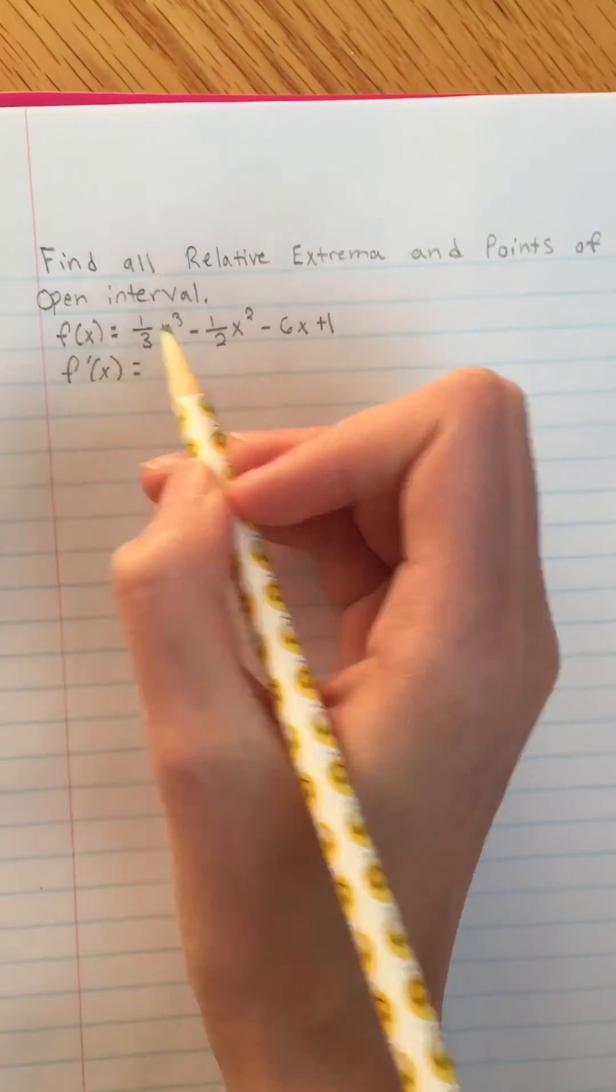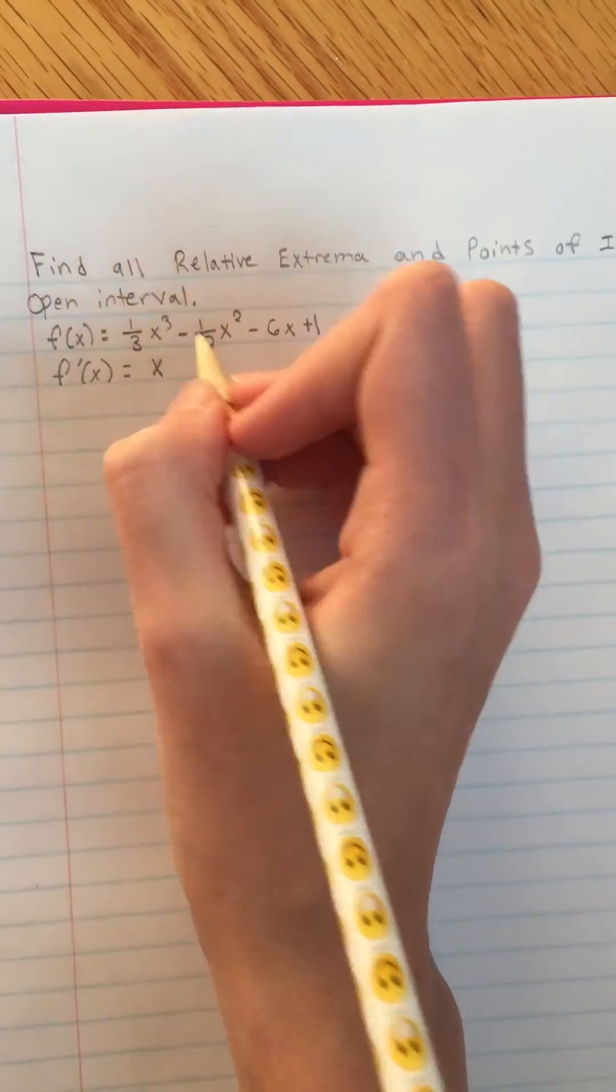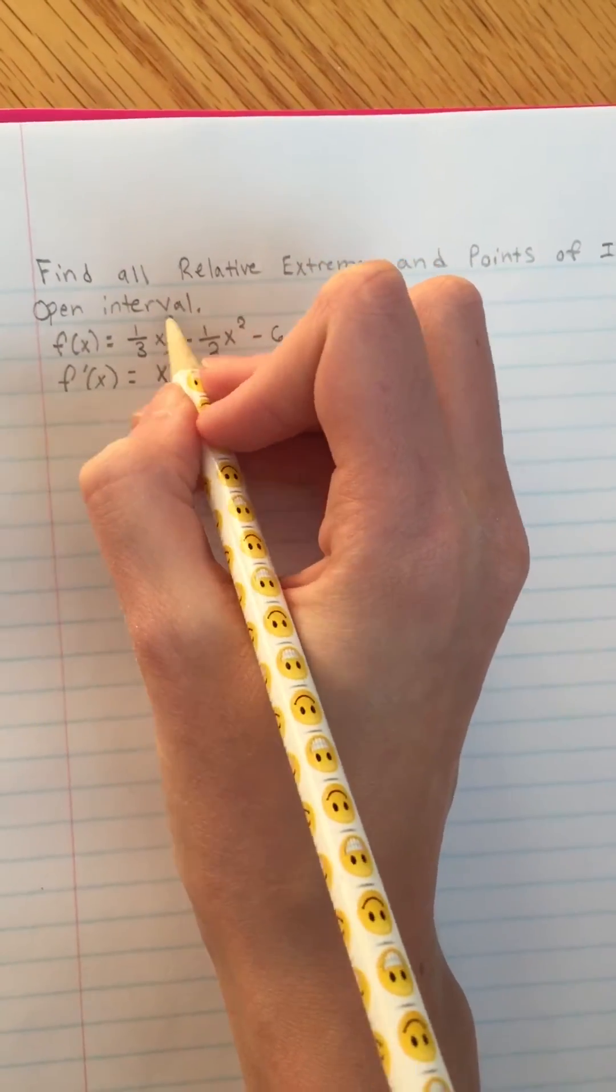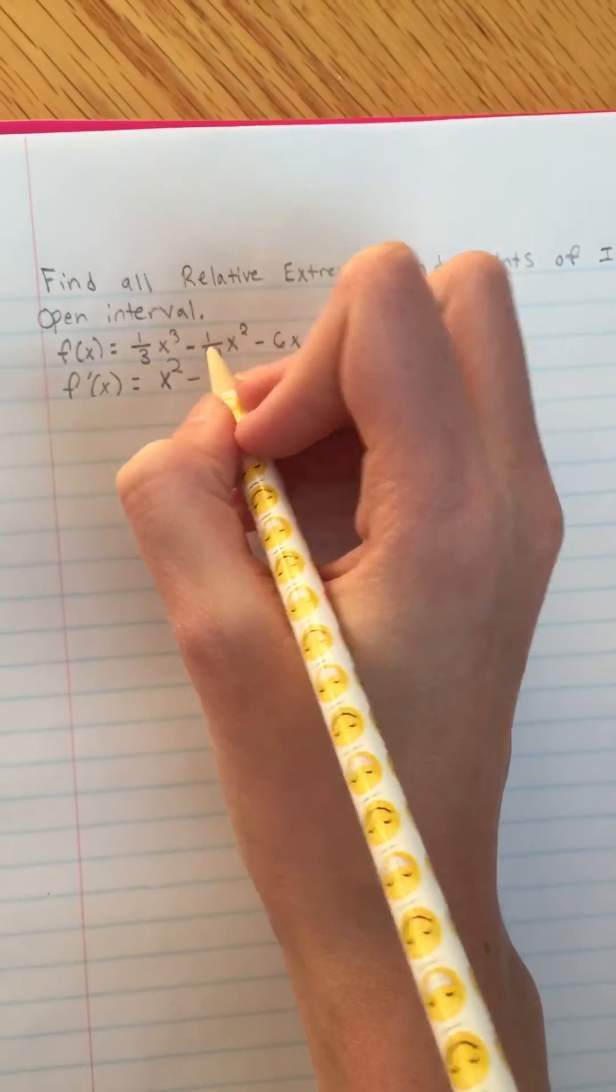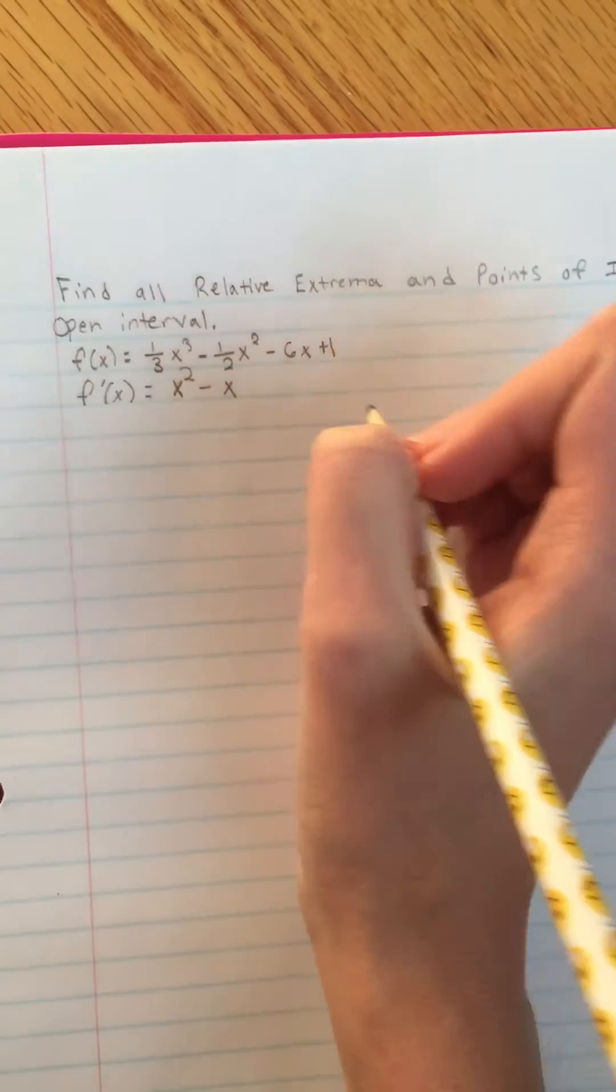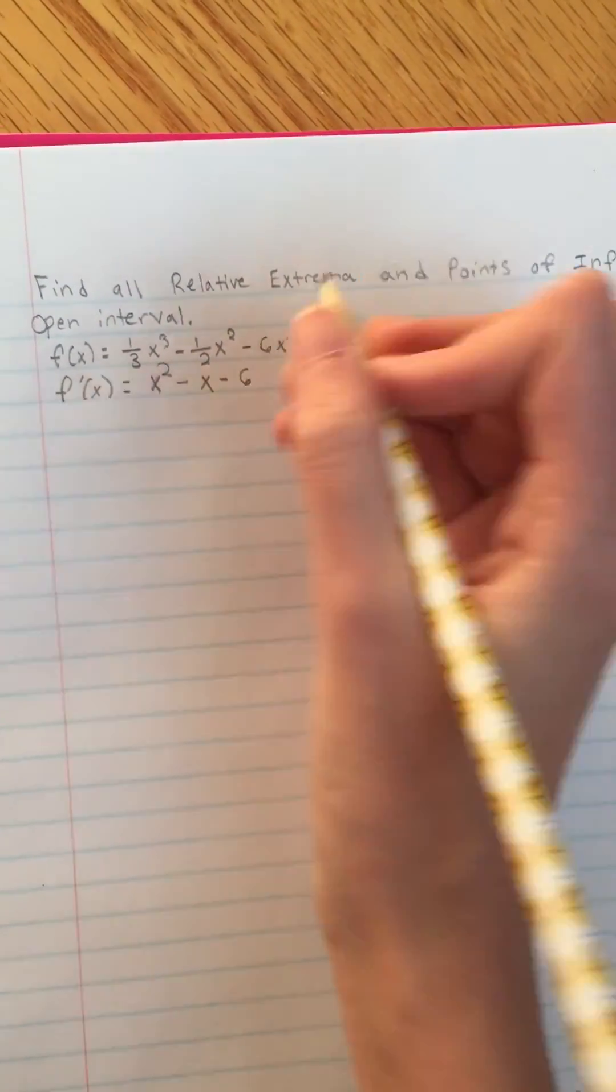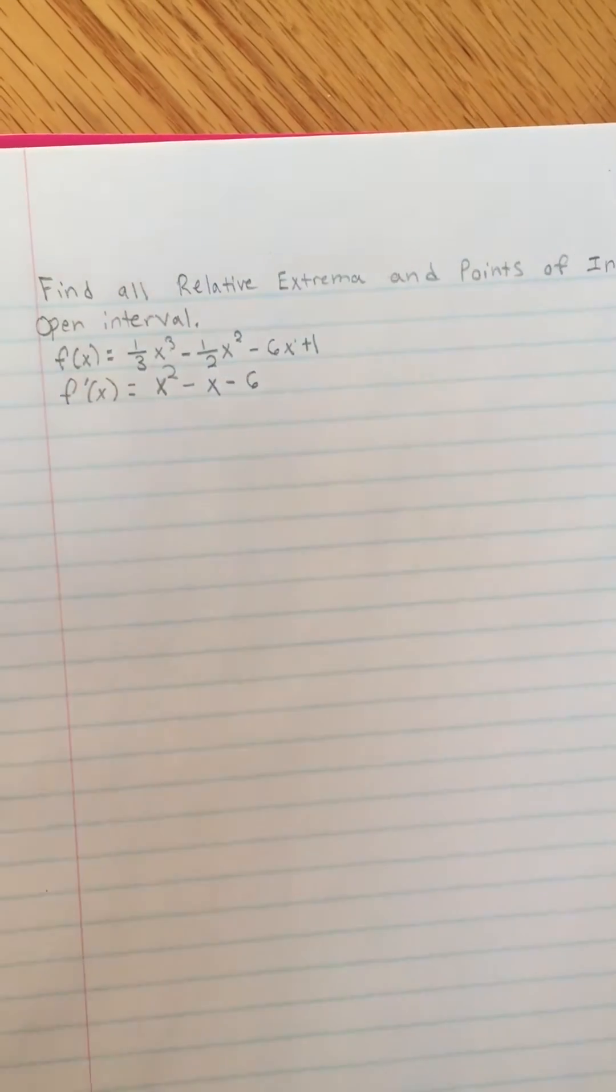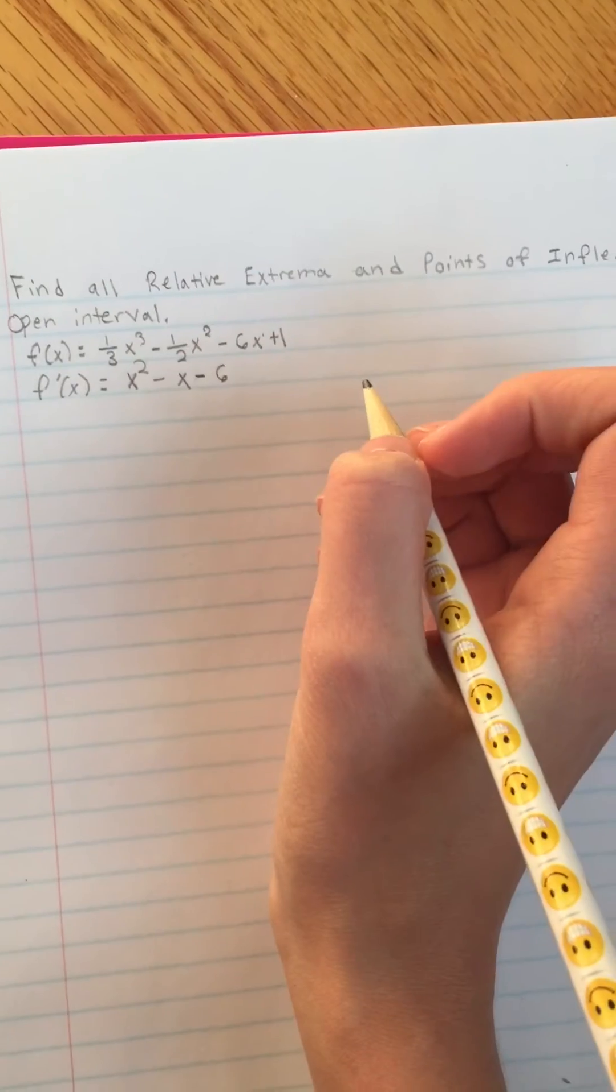We are just going to use the shortcut rule, so we just do 3 times 1/3 which gives us 1x squared because we have to minus 1 from 3. Do the same thing here—you're going to get negative x, and then for this one it's just going to be negative 6 because 1 times negative 6. And the derivative of a constant is always 0, so you don't have to worry about that one.